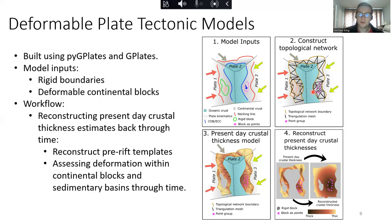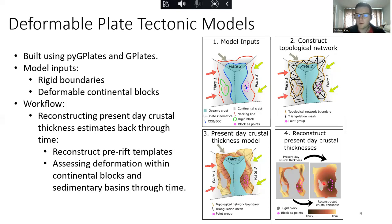Once we have this topological network, we can input a present-day crustal thickness model into our triangulation mesh and use this to reconstruct crustal thickness estimates back throughout geological time. The crustal thickness model is derived from a 3D gravity inversion, and we can reconstruct it to a time frame of interest. For rifted margins, this is really advantageous because we can reconstruct pre-rift templates and also assess the deformation within the continental blocks and within the sedimentary basins.